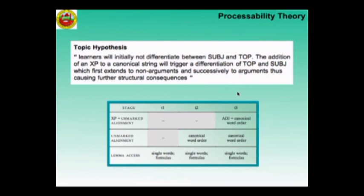The topic hypothesis: learners, after the unmarked alignment hypothesis stage, will initially not differentiate between subject and topic. But the addition of something before the canonical word order string will trigger a differentiation between topic and subject. Remember that the subject was the only element common to both the discourse dichotomy and the argumental dichotomy, and that by default topic is subject and subject is topic.